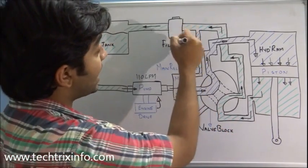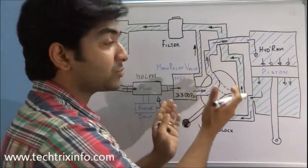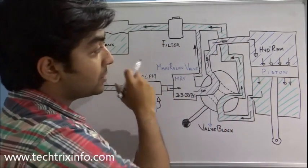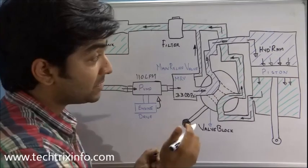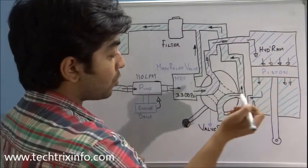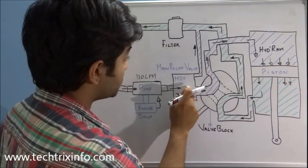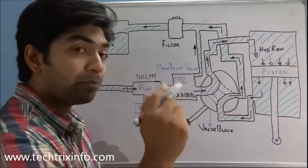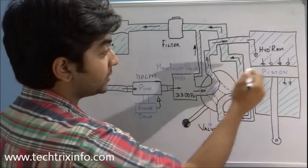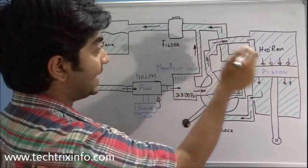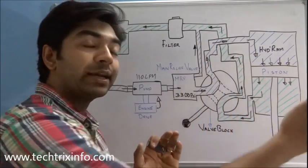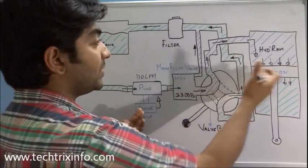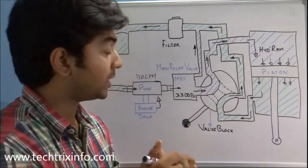This is our hydraulic filter, which filters the hydraulic oil before it reaches back to the hydraulic tank. If you want to learn specifically about the hydraulic ram, valve block, main relief valve, filter, or hydraulic pump, you can bring your mouse cursor over that portion — it will get highlighted. Click on it and you'll go directly to the video explaining the working of each component separately.